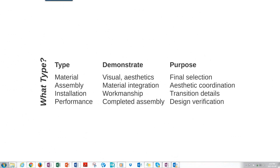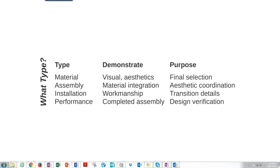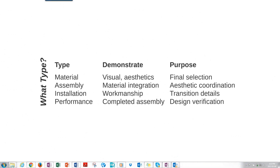Looking at the purpose of these mock-ups: materials are often mocked up to confirm final selection — did the architect make the right color and texture choice? The assembly mock-up confirms aesthetic coordination between multiple materials. The installation mock-up looks at transitions, how the assembly is actually put together, how materials are terminated and joined. Performance is about verifying that the design actually achieves the specified performance.